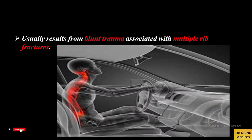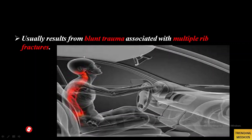Today we will learn about flail chest, which is an emergency condition resulting from trauma. The usual cause of injury is blunt trauma, which is associated with multiple rib fractures. For example, if a person's chest hits a steering wheel and ribs are fractured, it may lead to flail chest.